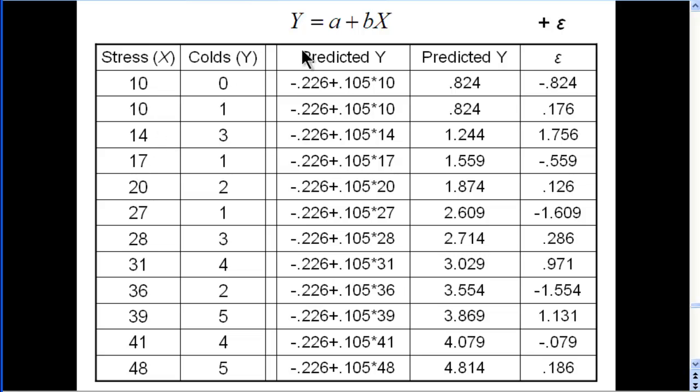So we can still use our regression equation to predict how many colds somebody would have if their stress levels were equal to 12. Now nobody in this sample has a stress level of 12, but that doesn't mean we can't use the regression equation to predict what somebody with a 12 level of stress would have in terms of colds. It's totally legitimate and that's why it's powerful to build this regression equation analytically.